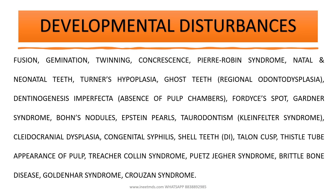Then cleidocranial dysplasia — the classical extraoral features and the classical OPG finding. Then congenital syphilis: you should mainly know Hutchinson's triad with its three classical features, Mulberry molar, and Hutchinson incisor. Then shell teeth, thistle tube appearance of pulp seen in dentin dysplasia, and Talon's cusp, along with its associated syndromes — of which Rubinstein-Taybi syndrome is very important.